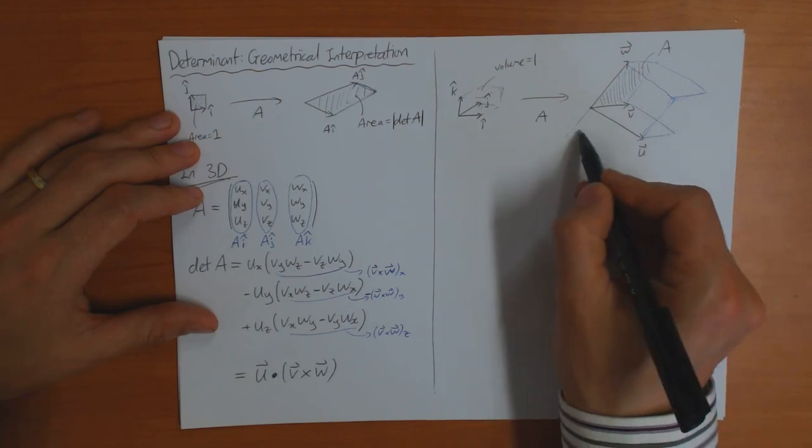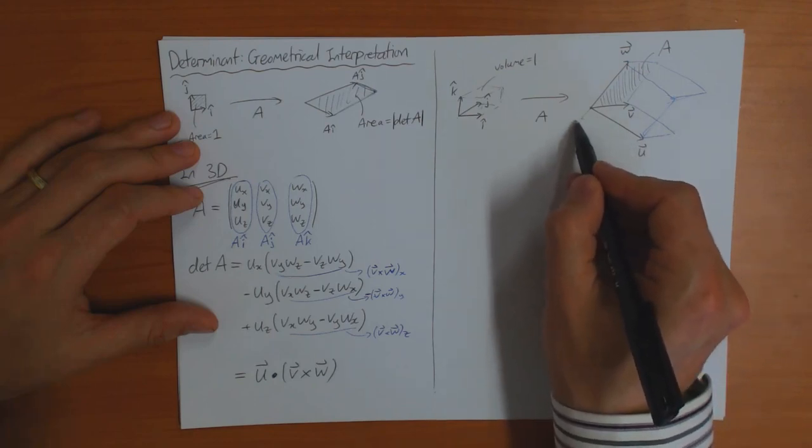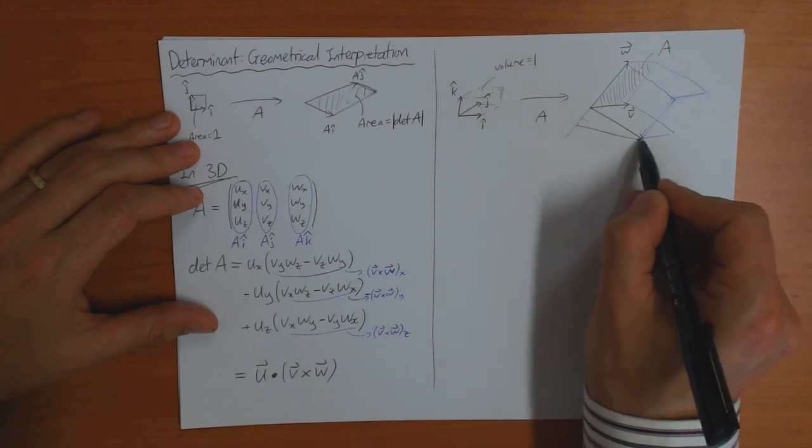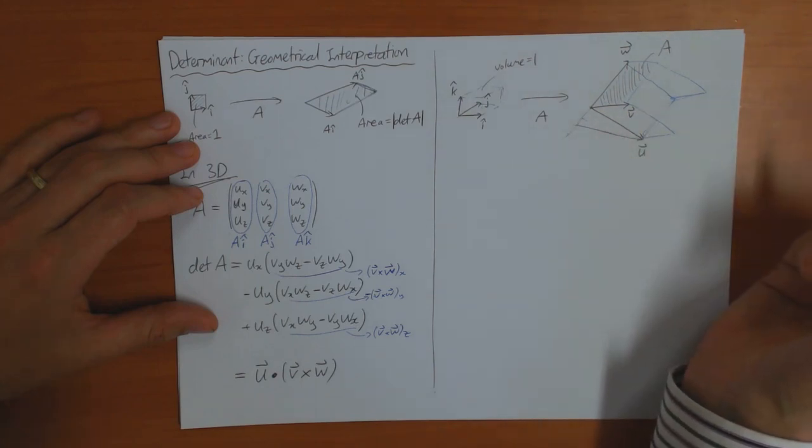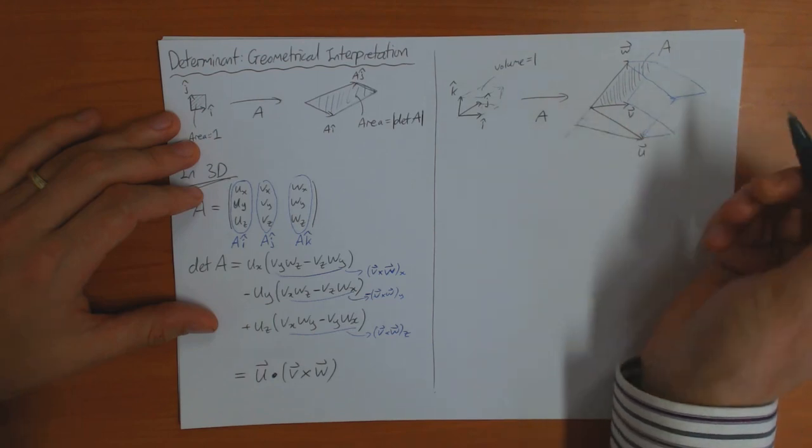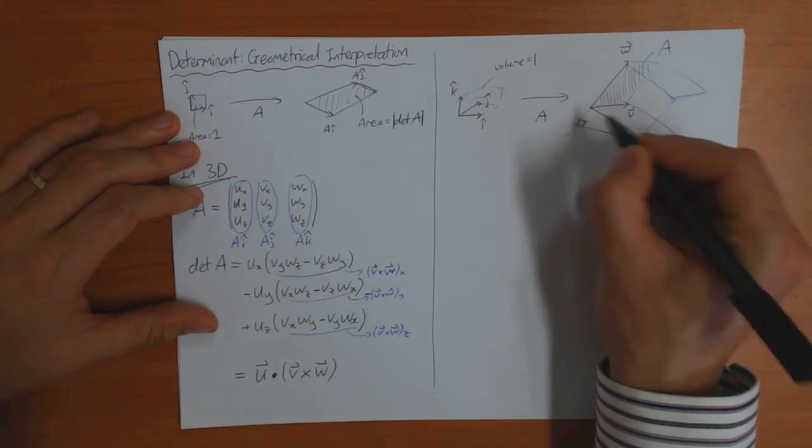So if I call this area A times the perpendicular height from here. So if I extend this here and make this a right angle, it's quite hard to draw. If this is a right angle here,